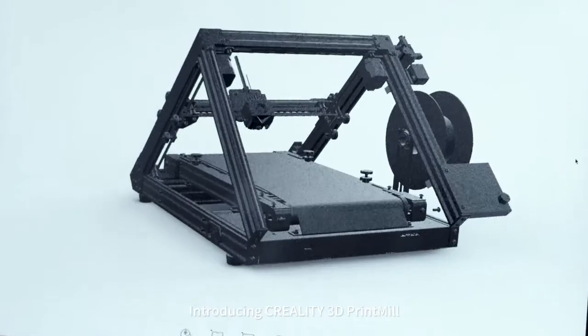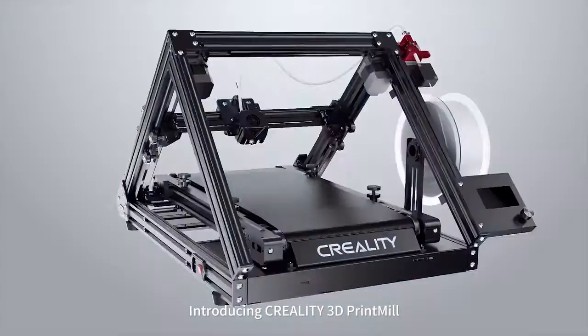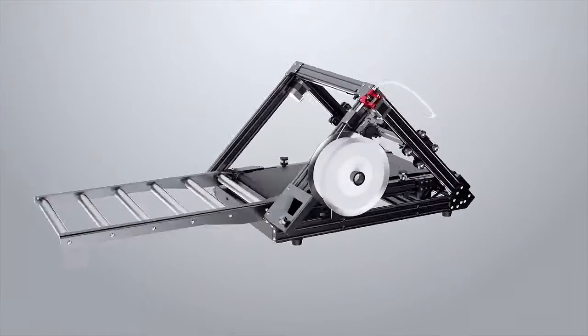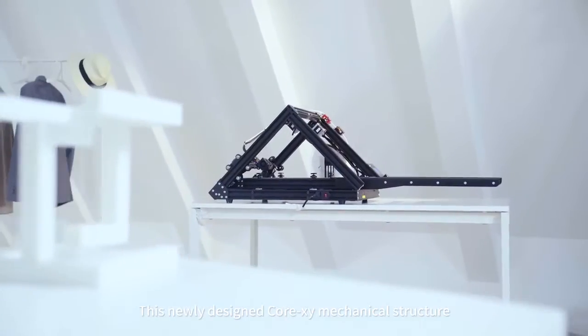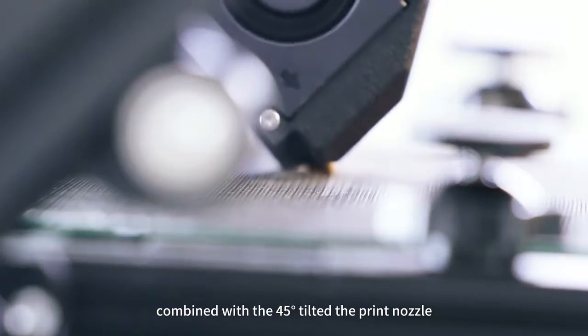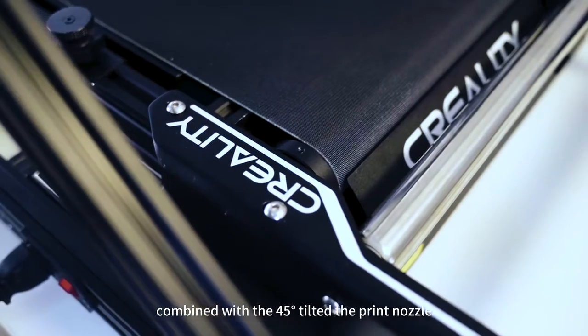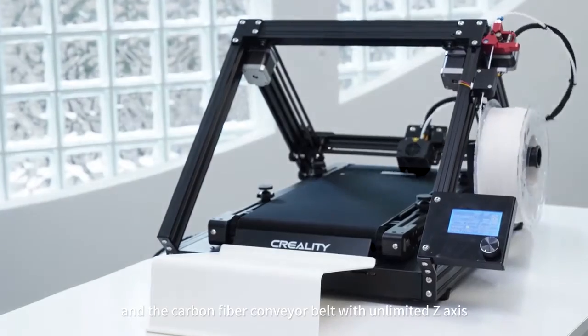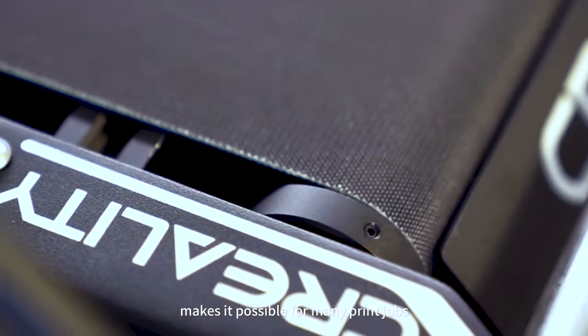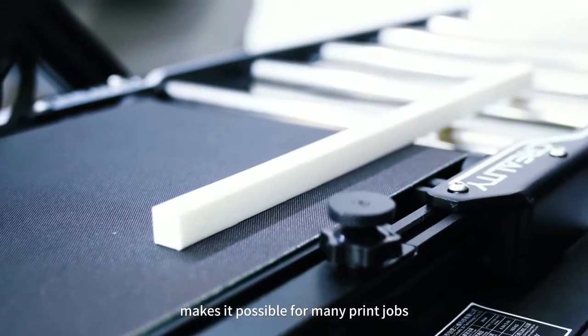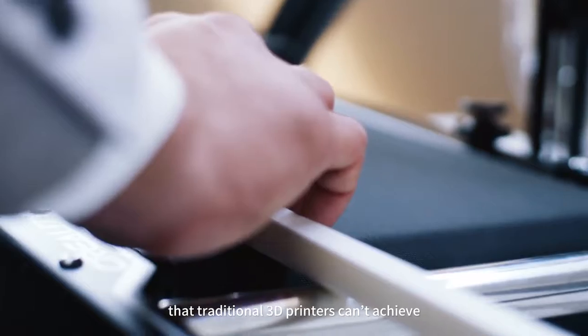Introducing Creality 3D Print Mill. This newly designed Core XY mechanical structure combined with the 45-degree tilted print nozzle and the carbon fiber conveyor belt with unlimited Z-axis makes it possible for many print jobs that traditional 3D printers can't achieve.